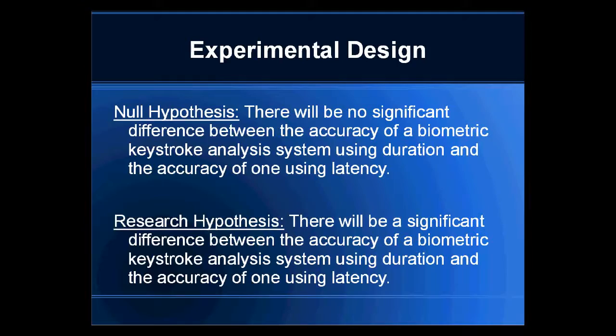I chose to do that in two different ways. The dependent variable is accuracy. Duration and latency are the things I tried to test. Duration is the time it takes to hold a key pressed; latency is the time in between adjacent keys. I hypothesized that there would be a difference in accuracy between duration and latency.